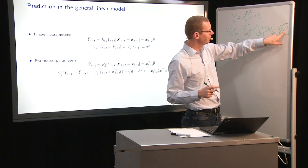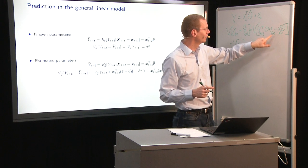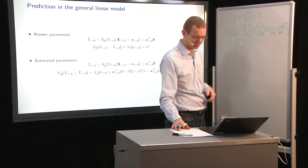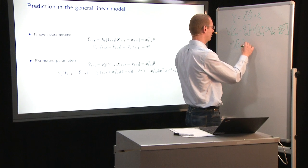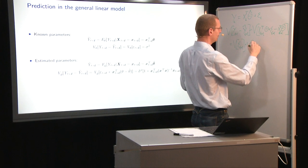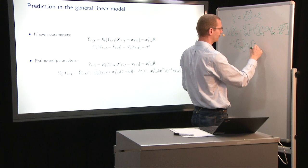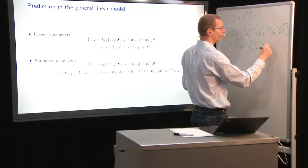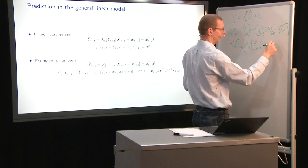Put it another way, the uncertainty from the estimated theta at time t is independent of epsilon in the future. So what we have more is then plus the variance of this here.